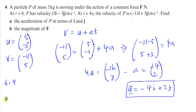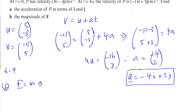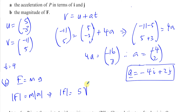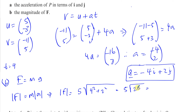Part B says: find the magnitude of the force F. So F equals mass times acceleration. The magnitude of the force is the mass times the magnitude of the acceleration. That's going to be 5 kilograms times the square root of 4 squared plus 2 squared, which is 5 times the square root of 16 plus 4, which is 5 times root 20.